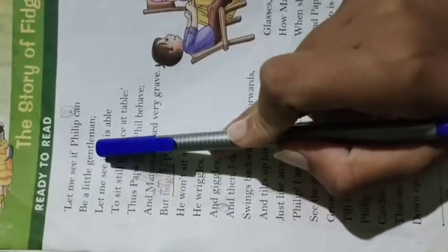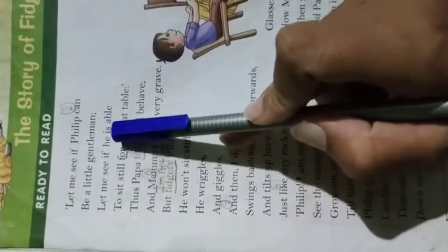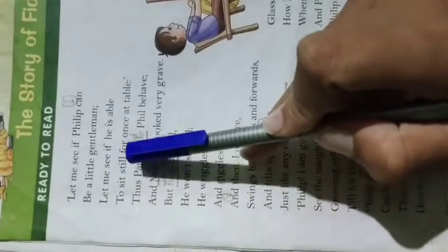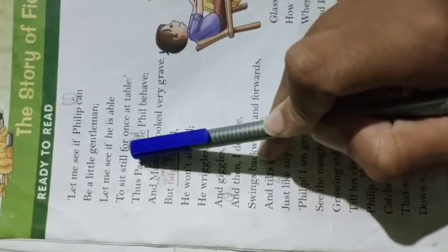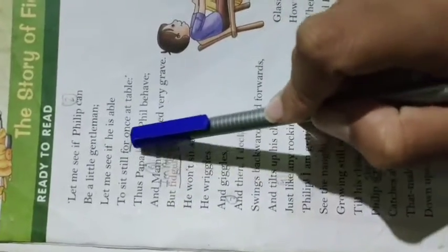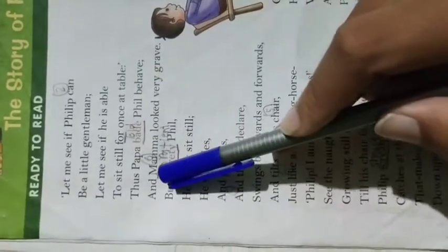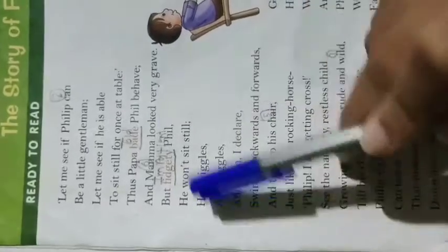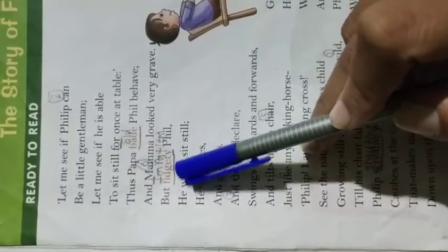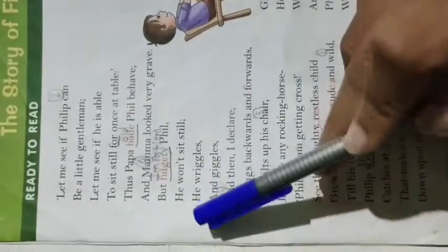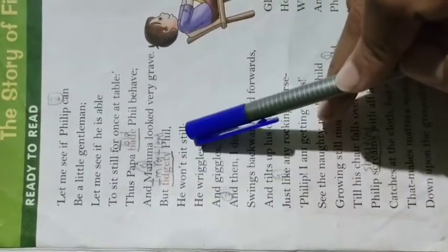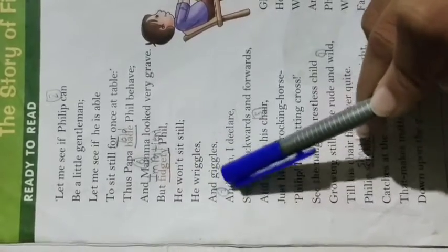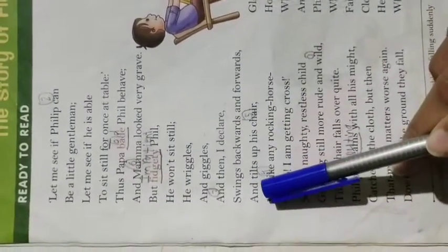Let me see if Philip can be a gentleman. Let me see if he is able to sit still for once at table. This is Papa bid Phil behave, and Mama looked very grave. But fidgety Phil — we don't read it as 'fidgety Phil,' that is wrong pronunciation. We read it as 'fidgety Phil.' He won't sit still.